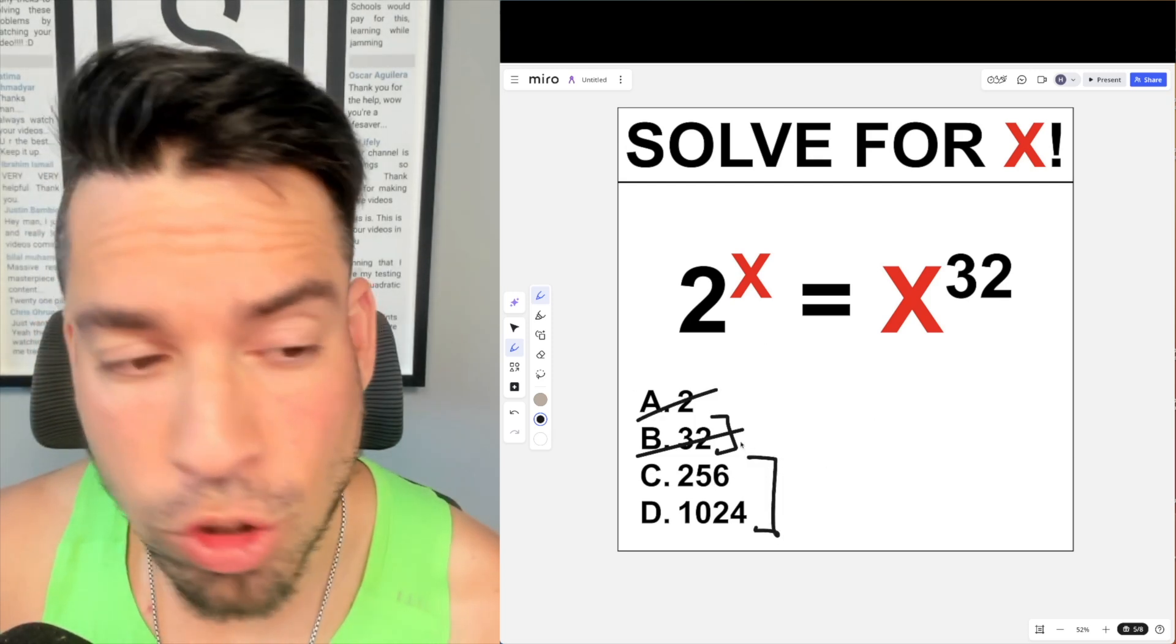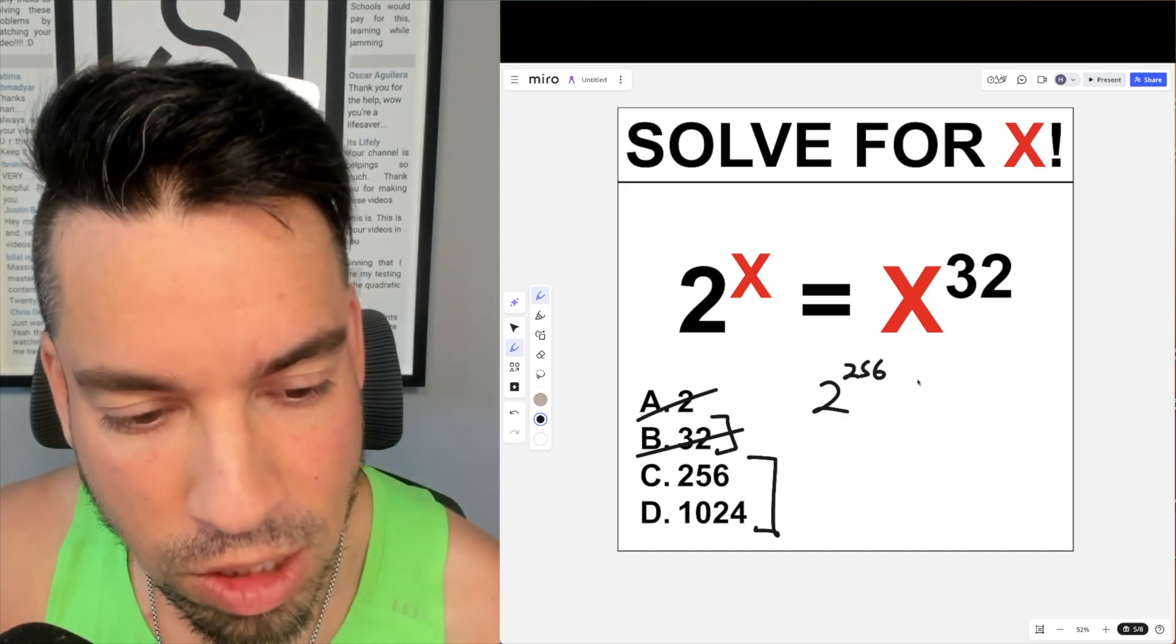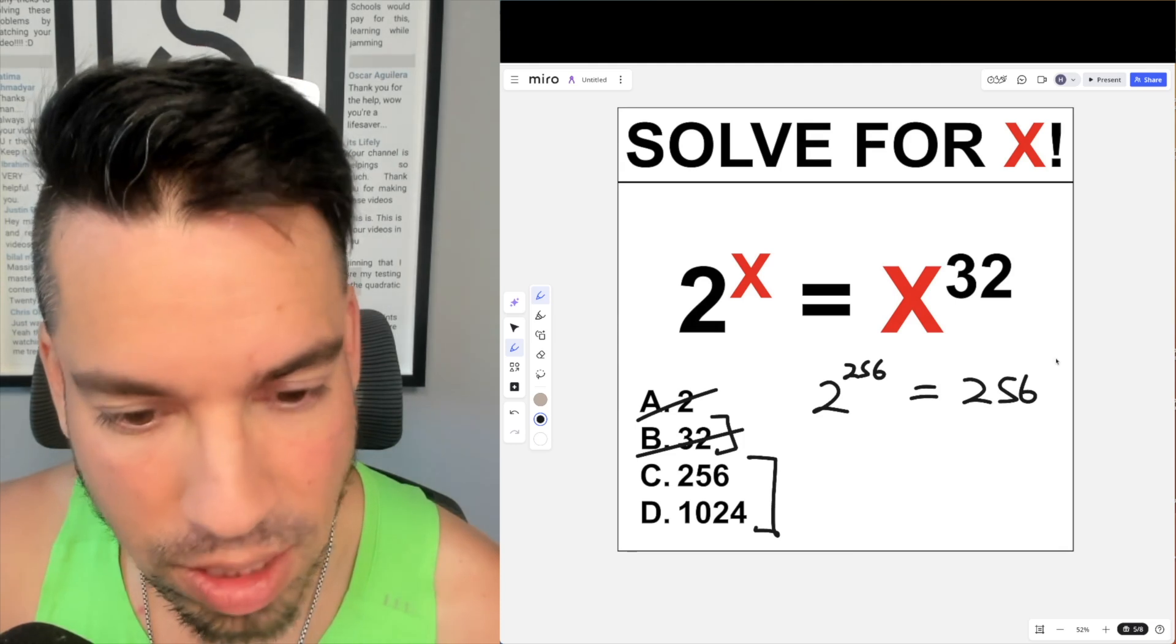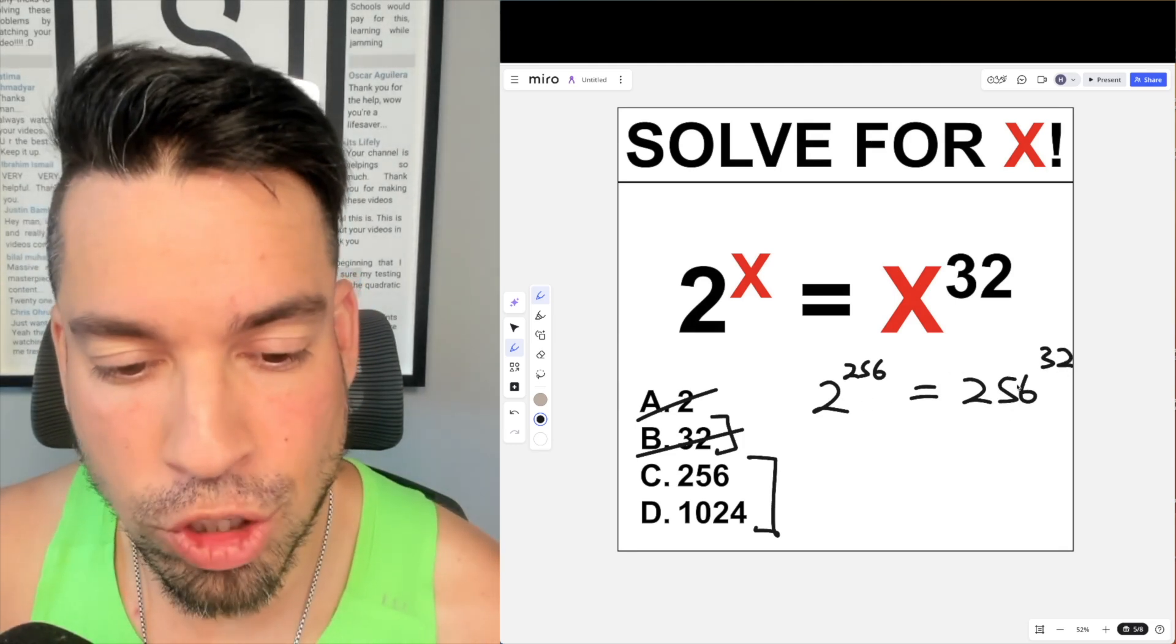I'm going to start with 256 here and we're going to plug it in. So we have 2 to the 256 power potentially equaling 256 to the 32nd power. How can I see if these two are equal to each other?